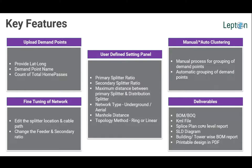Key features include: providing lat-long and uploading demand points; setting up the user-defined panel where you can configure all your splitter ratios and maximum distances for fiber length; the process of grouping demand points — automatic grouping or manual grouping; fine-tuning the networks and managing the splitter locations; changing the feeder and secondary network ratios. And of course, the deliverables come in multiple formats — whether PDF, Excel, or KML files for graphic information, or BOM and BOQ for cost and quantity information.